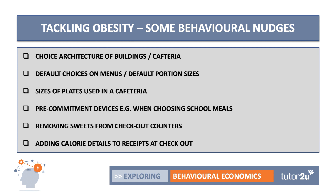The design of a building and a cafeteria — the layout, the signage — can encourage you to eat healthily. Information can also be quite important. Default choices on menus and default portion sizes mean that if you change the default, that in theory is an easy way to change consumption. How menus are organized, what appears at the top, and how food is presented all matter.